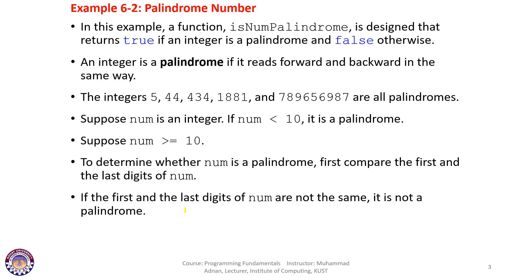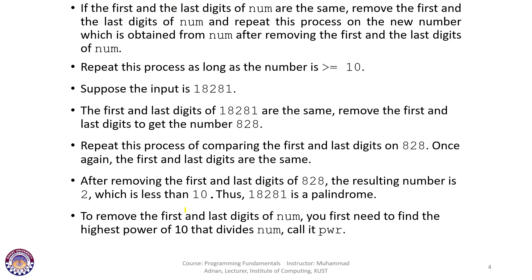These concepts are simple, but let us see how this problem becomes more difficult. If the first and the last digit of the number are the same, we remove the first and the last digit and repeat this process on the new number obtained after removing them. We repeat the process as long as the number is greater than or equal to 10.